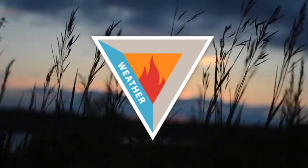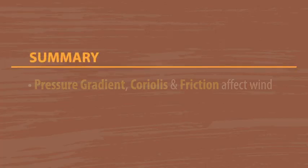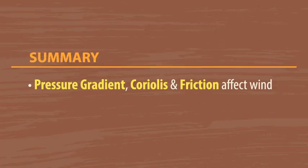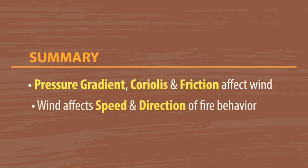In summary, pressure gradient, Coriolis, and frictional forces are constantly working together to determine how fast the wind is blowing and what direction it is coming from. This in turn impacts the speed and the direction of fire spread.